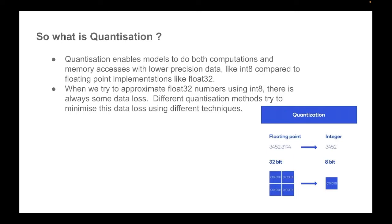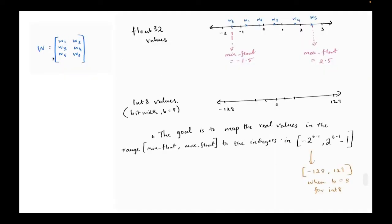So when we do this, when we try to approximate float 32 numbers using int8, there's of course some error, and different quantization methods try to minimize this error using different techniques. So let's take this weight matrix for example, and it has all float 32 values. Let's plot all these values on a number line.